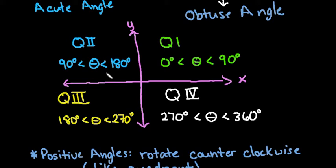Quadrant 2 has angle measures between 90 and 180 degrees. Quadrant 3 has angle measures between 180 and 270 degrees, and quadrant 4 has angles between 270 and 360 degrees.